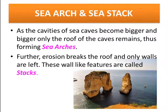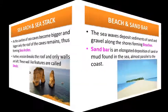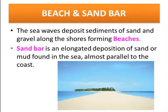In summary, from a sea cliff, as waves lap on it, cracks develop and over time become larger and wider making a sea cave. The cavity becomes bigger and bigger with the roof alone remaining to form a sea arch. As time progresses, the sea arch's top portion breaks off, leaving the walls alone as a structure called a sea stack.